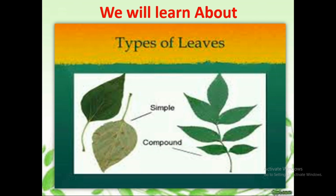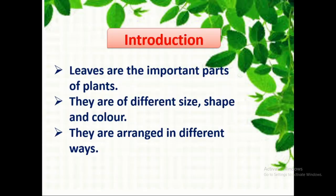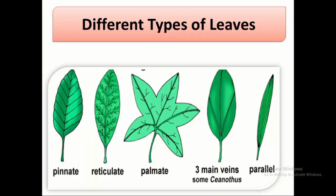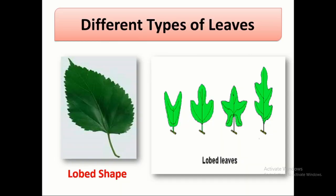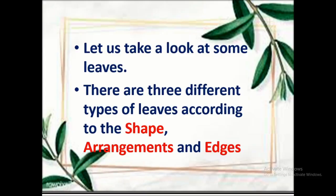Now we will learn about types of leaves. There are many different types of leaves. Some leaves are simple, some are compound, and some are different shapes and sizes. Leaves are important parts of a plant and they are arranged in different ways. Some leaves are fan-shaped, some are reticulate, some are palmate leaves, some are parallel veined, and some are lobed shaped.